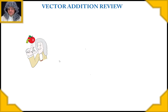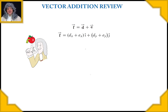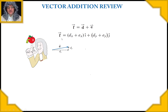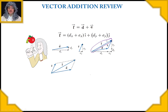Vector addition is something you should have done in statics and maybe even in calculus. The basic idea is: if we have two vectors D and E and we add them together, we get a vector F. If using components, we just add the individual components of D and E in the x direction and in the y direction to get the new vector F. As drawn, it also forms a triangle.